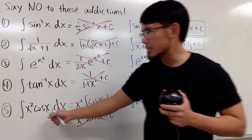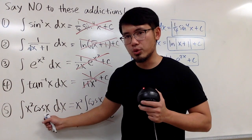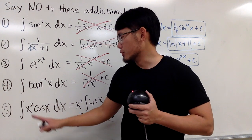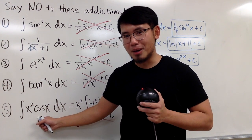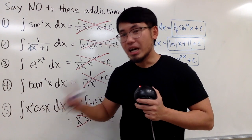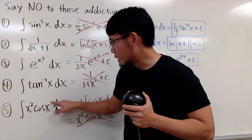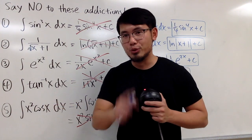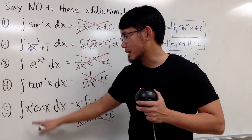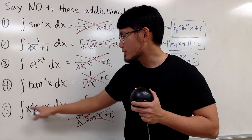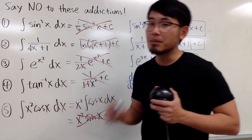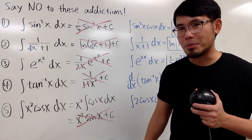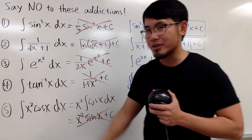The actual way to do it is by using integration by parts. If the power outside is just x to the first power, you can use u sub. But since x squared is multiplied by cos x here, be sure to check out the integration by parts video for this.